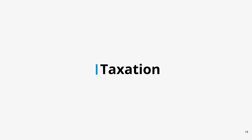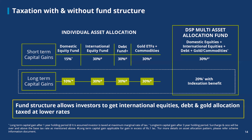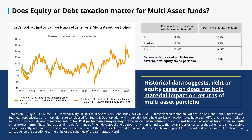Taxation is another important aspect for any investment. Capital gains from investments in debt, international equity, and gold used to be calculated using the indexation method until 31st March 2023. Since then, this rule has been removed. DSP Multi-Asset Allocation Fund is structured in a way that the indexation rule is applicable. Data shows 73% of times an indexation-based method is favorable over equity taxation.